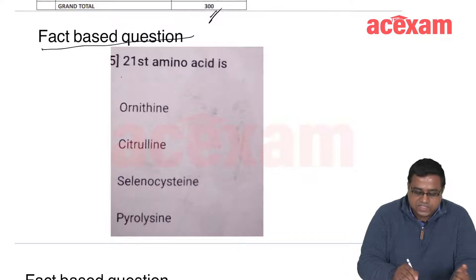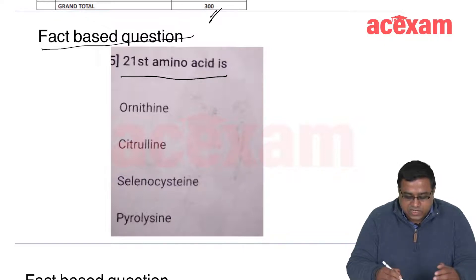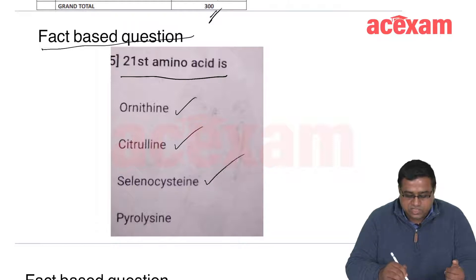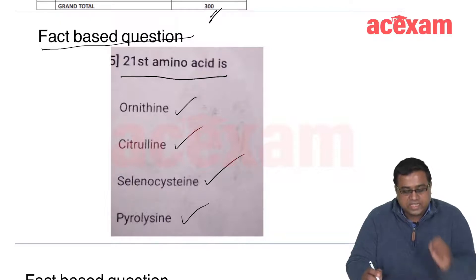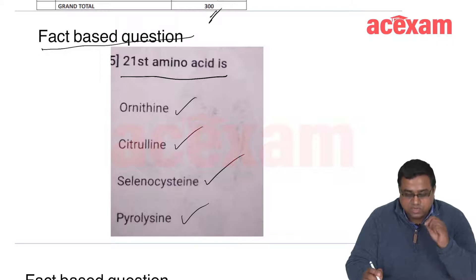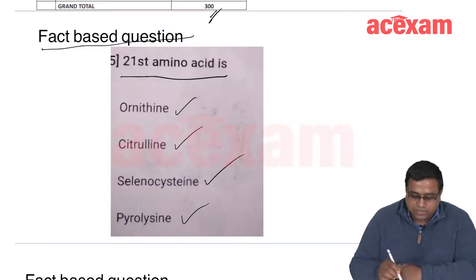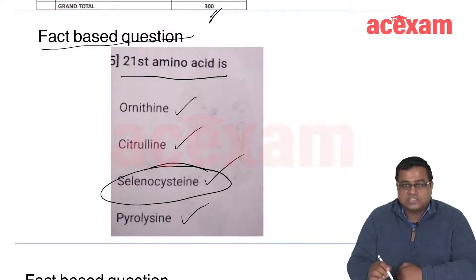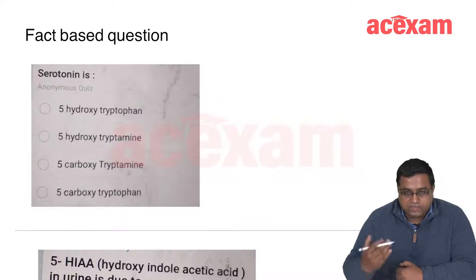For example: what is the 21st amino acid? You know there are 20 amino acids. The choices given are unusual amino acids — ornithine, citrulline, selenocysteine, and pyrrolysine — to confuse you. This is a fact-based question you can only answer if you know the fact. You can't guess. The answer for the 21st amino acid is selenocysteine. You just have to know it.